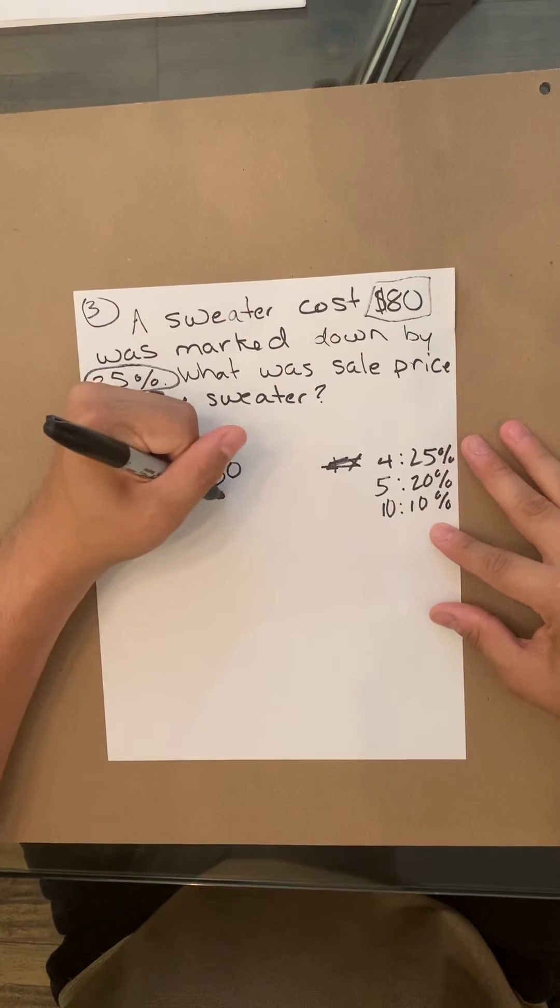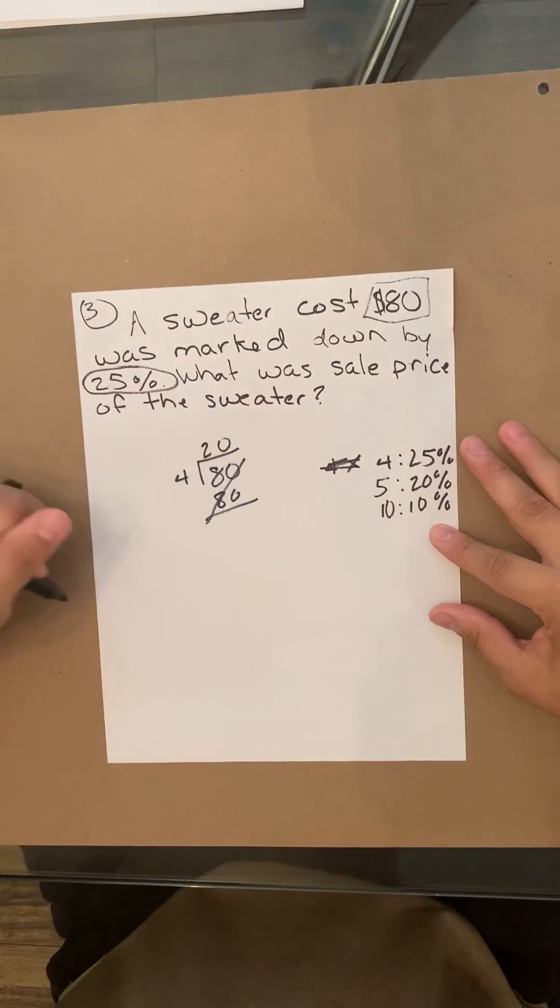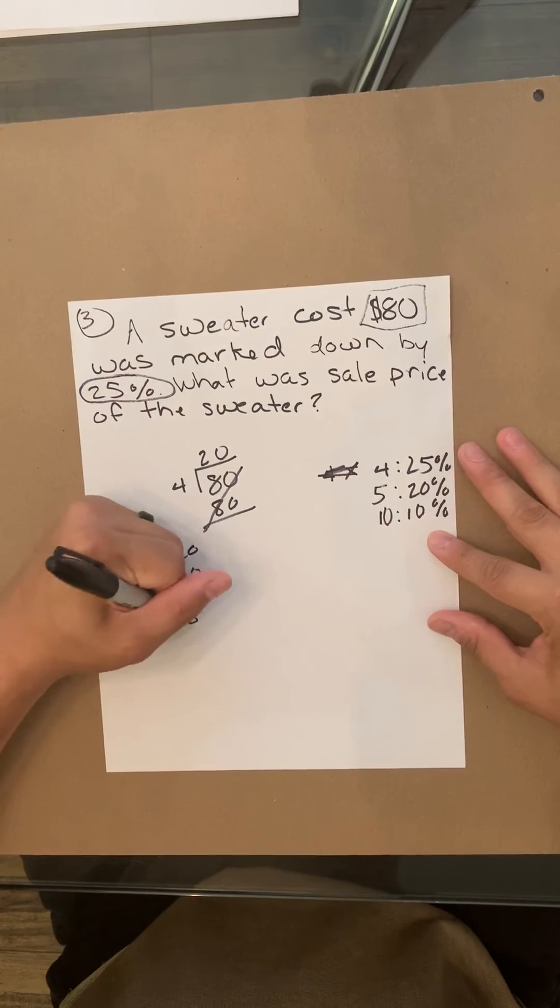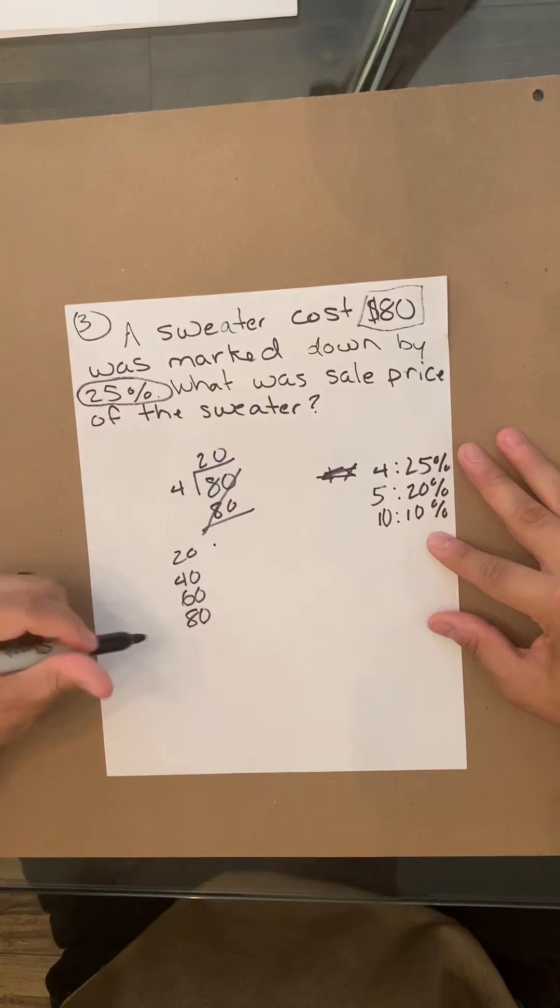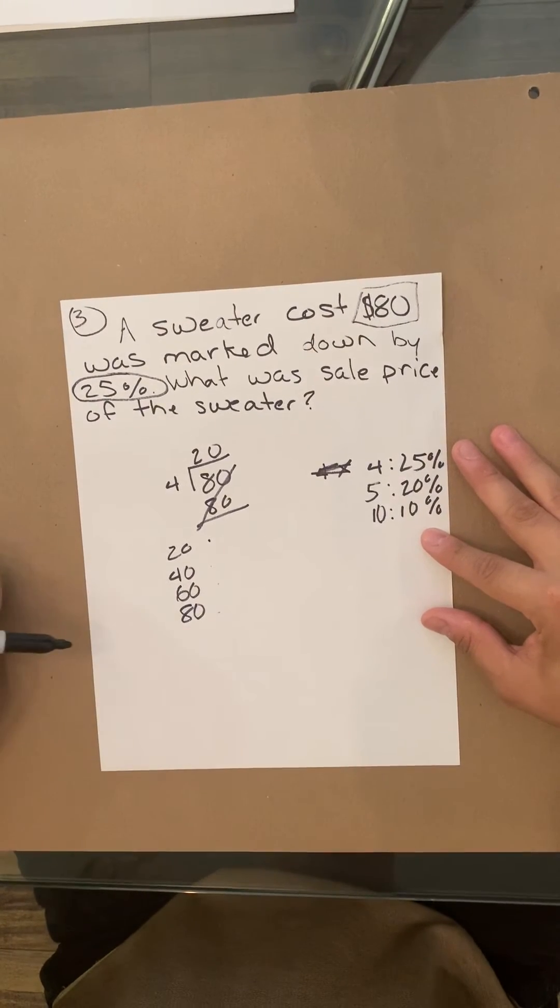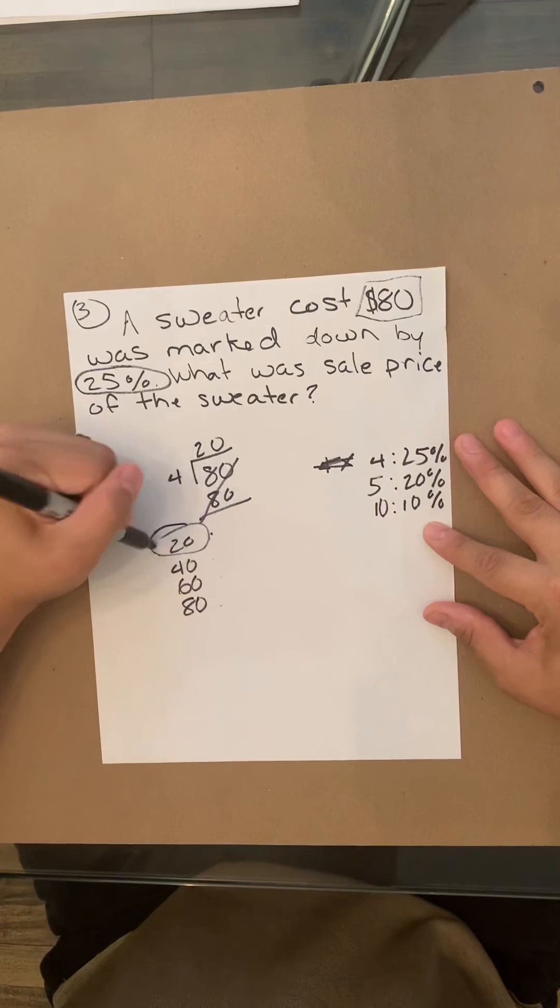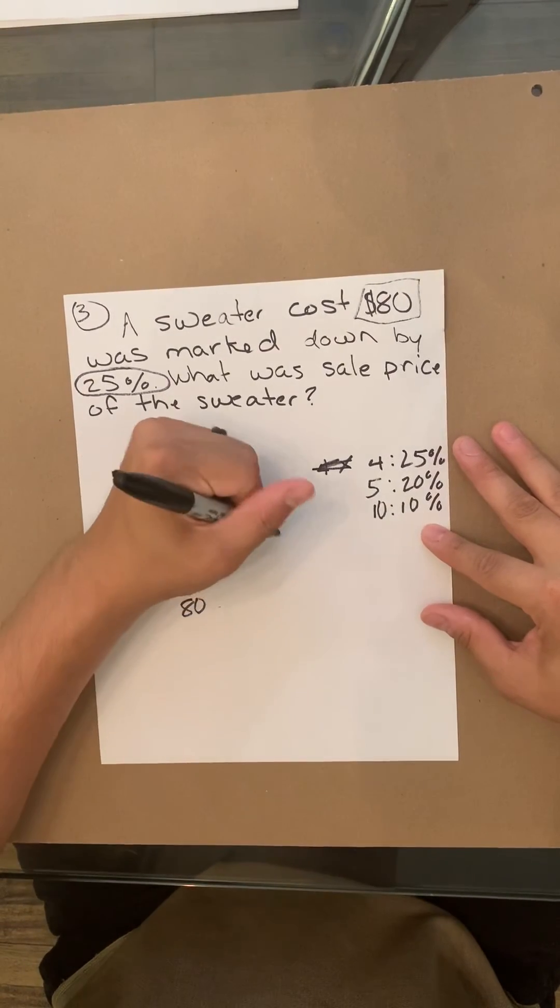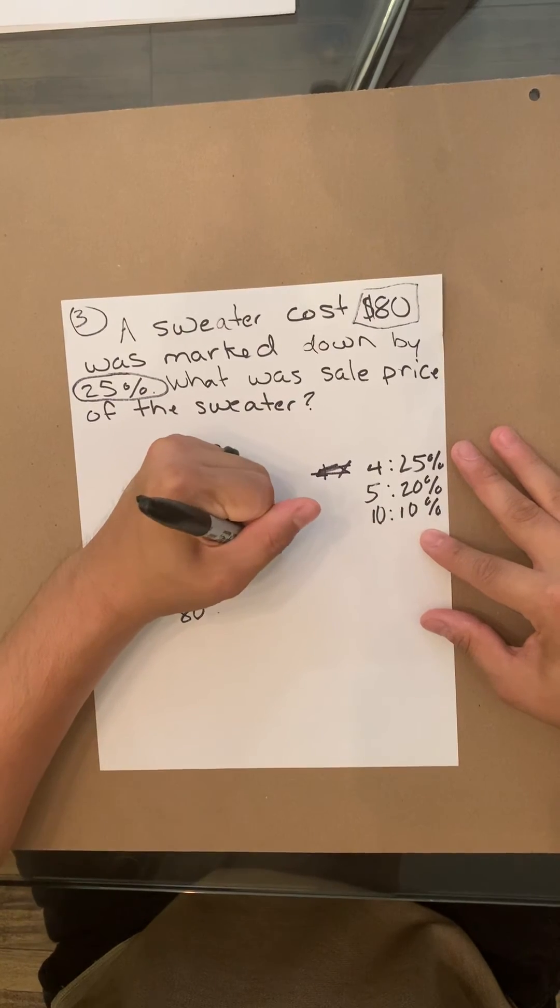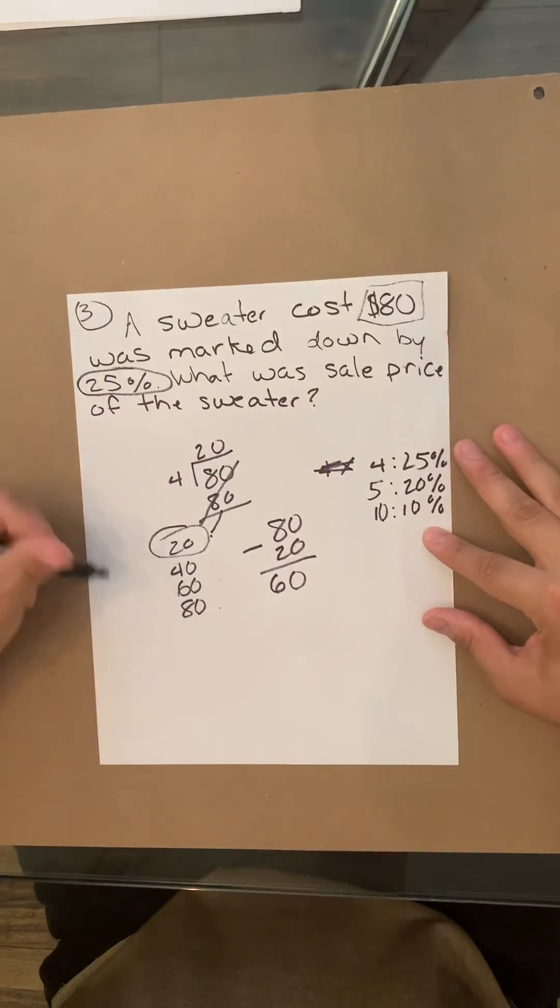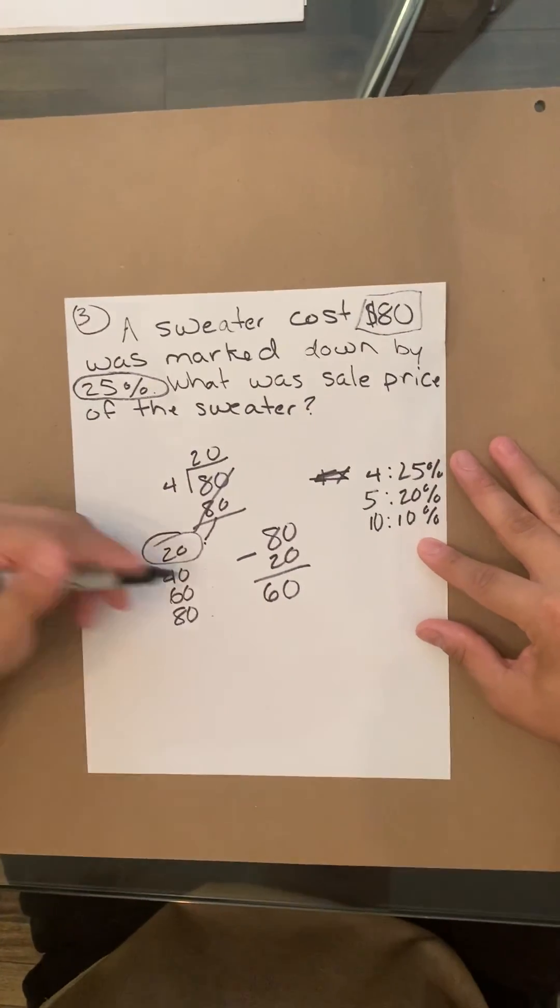20. Right, so I know 20, 40, 60, 80 equals 25, 50, 75, 100. So if I'm taking the 25% deducting it from the 80, that would just be 80 minus 20, and that makes it 60. So the answer to the question is it costs $60 for the sweater.